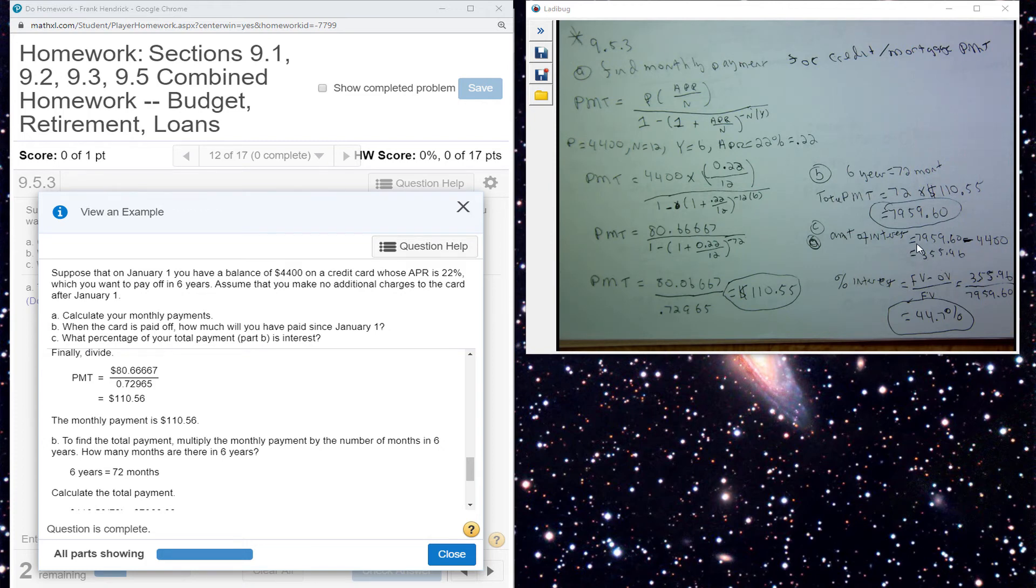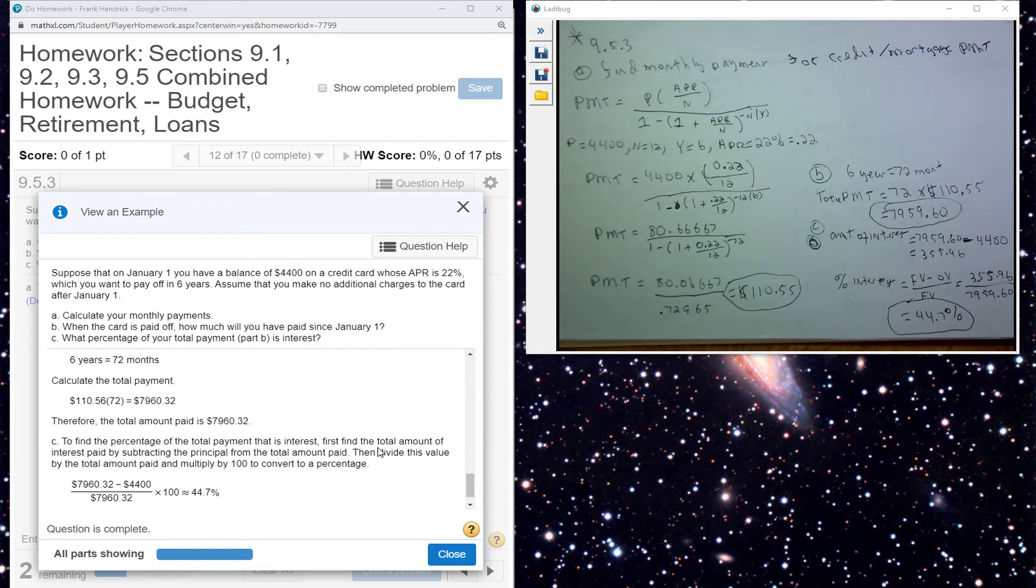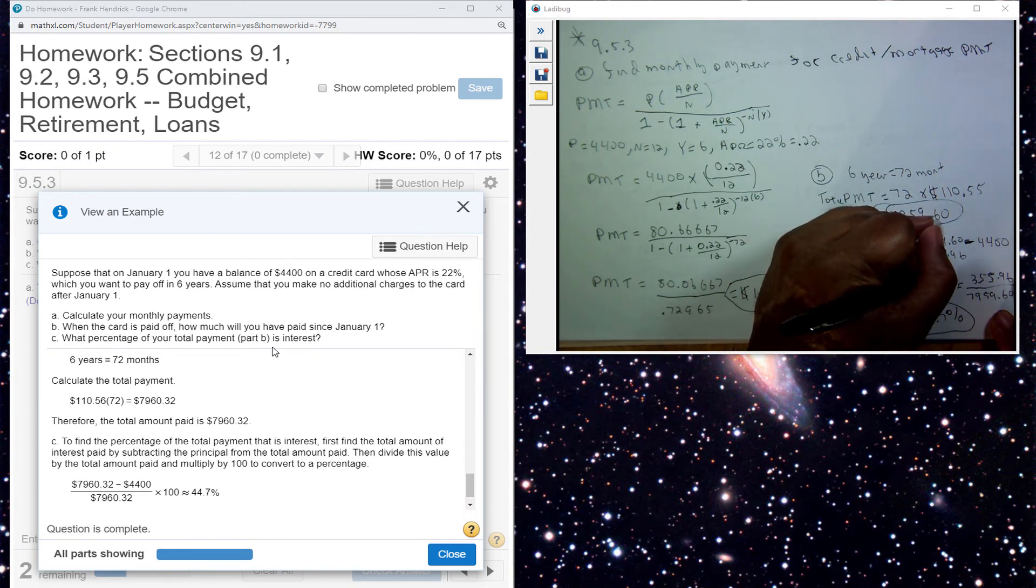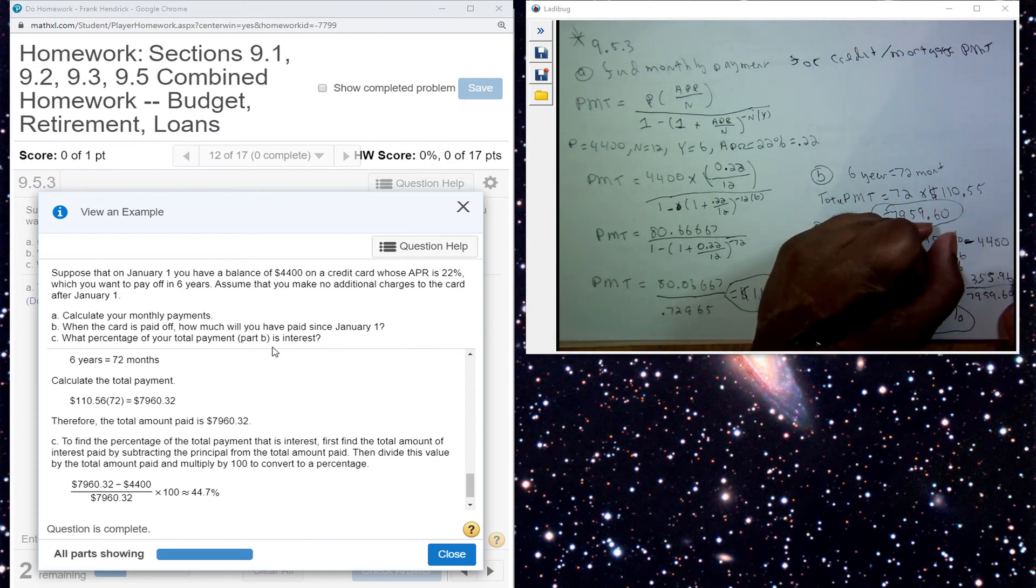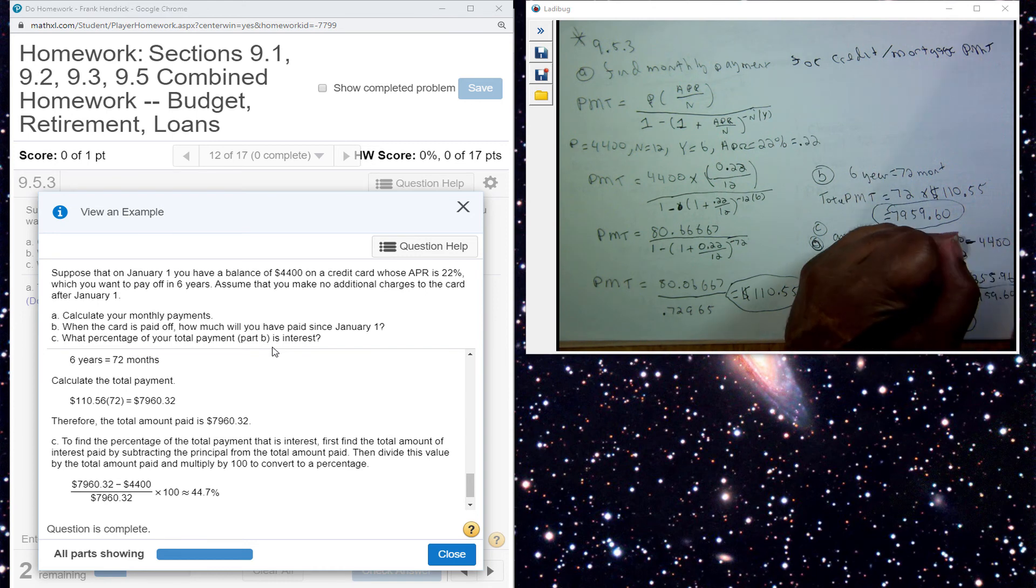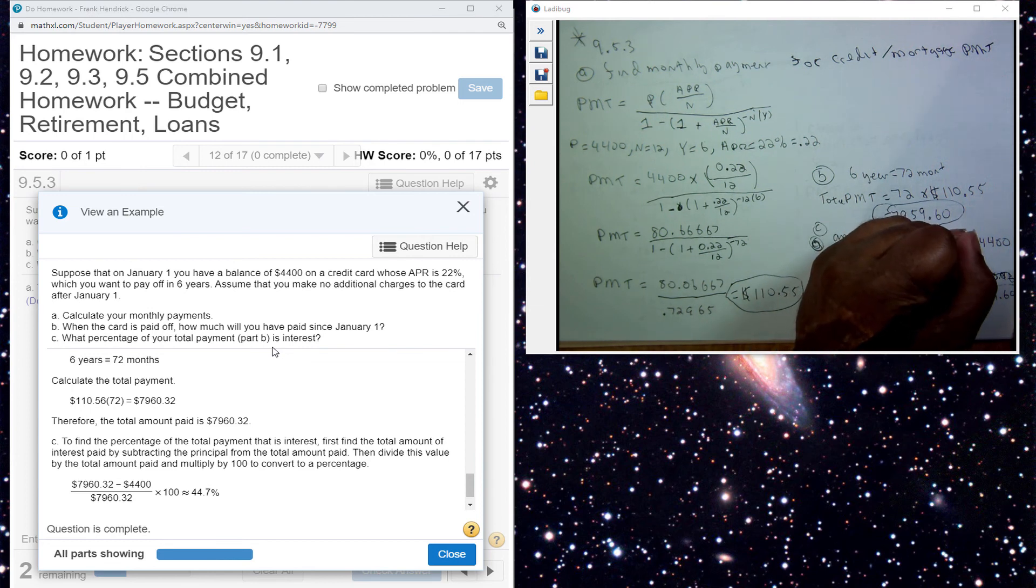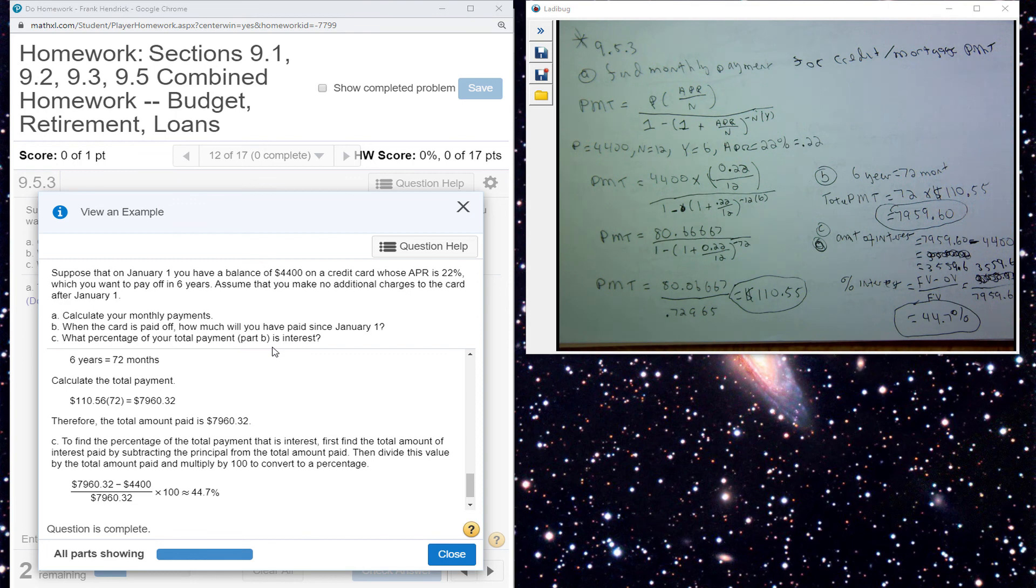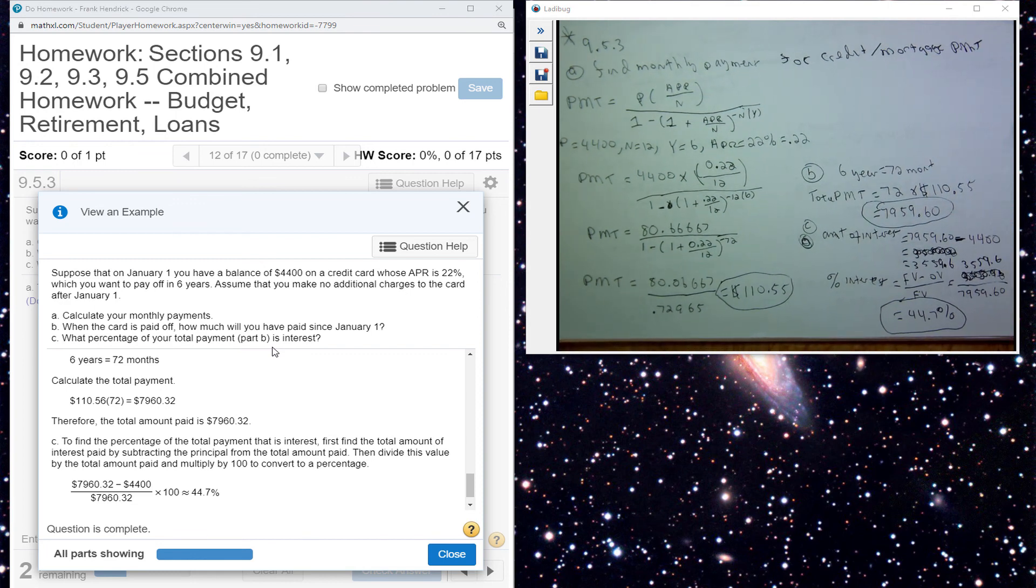$7,959.60 minus $4,100. The decimal is off on that one. That should be $3,859.60. And then you divide it, the decimal is in the wrong place. And you end up with 44.7%, that's how much is interest.